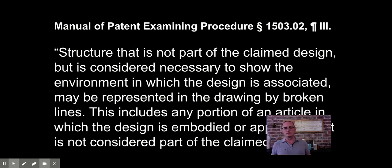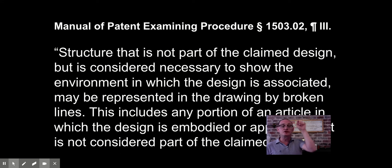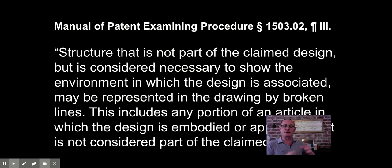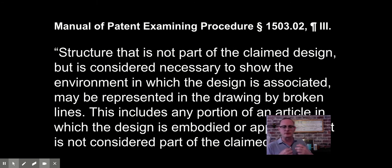There's an additional feature that design patent applicants can use to indicate what parts of the drawing they want to claim. You claim the parts of the drawing that are part of the patent in solid lines, but you use dotted lines to provide an indication of the context in which the claimed design exists without actually claiming those broken-line elements. So if you see dotted lines or broken lines in a design patent drawing, the area depicted in broken lines isn't part of what the patent is actually claiming.